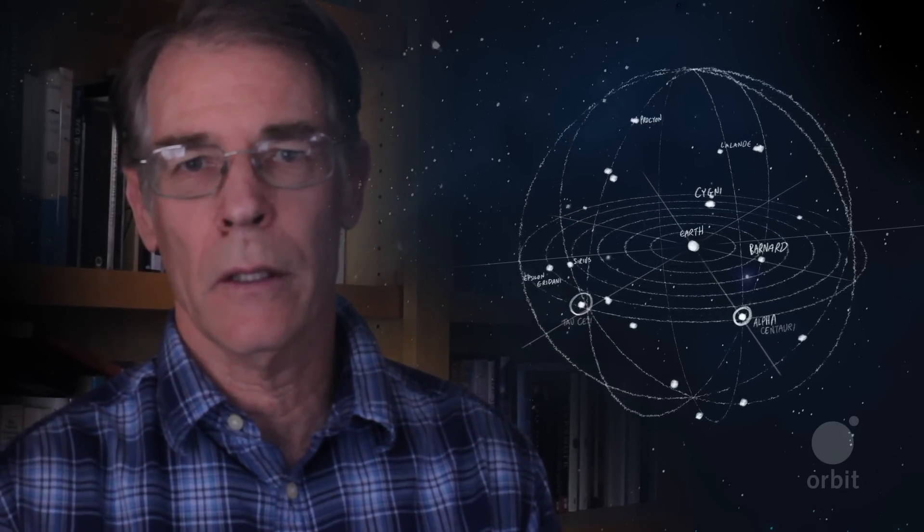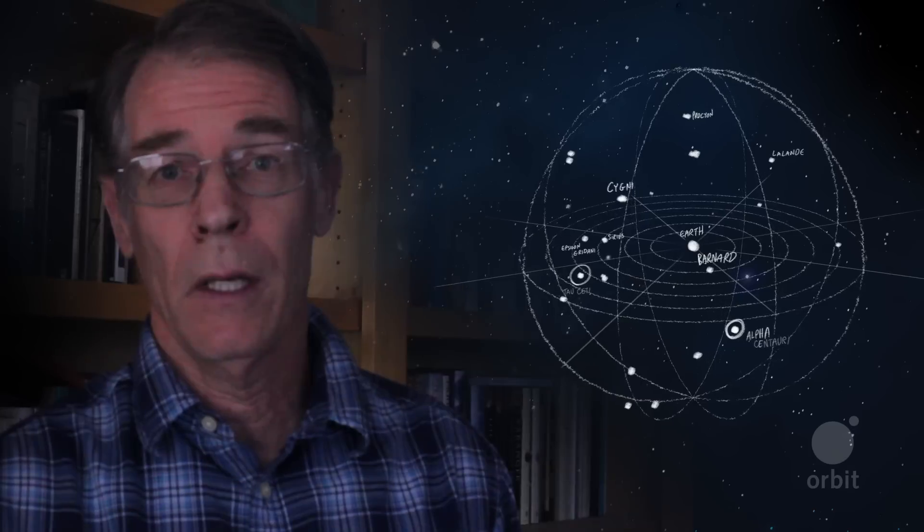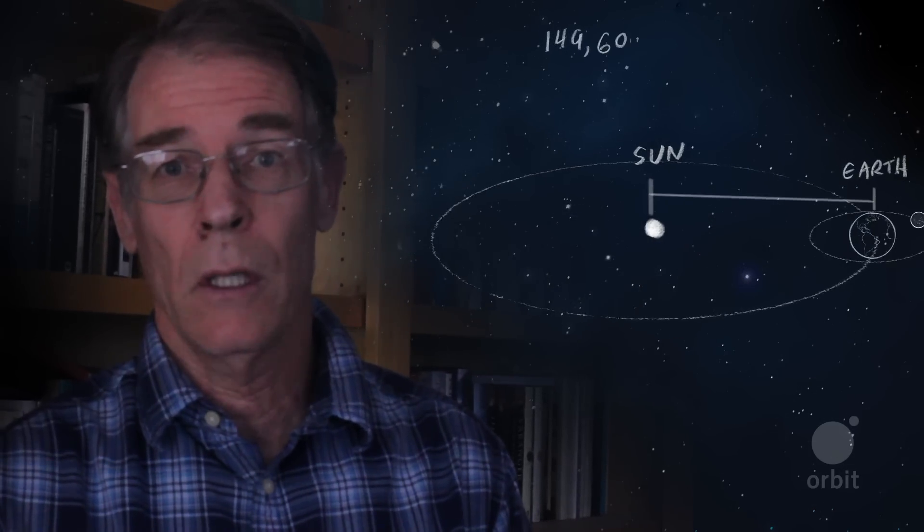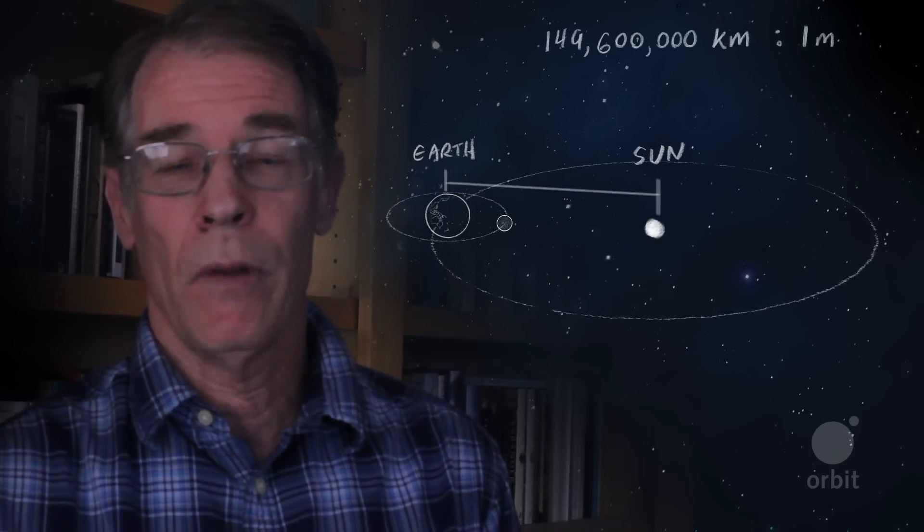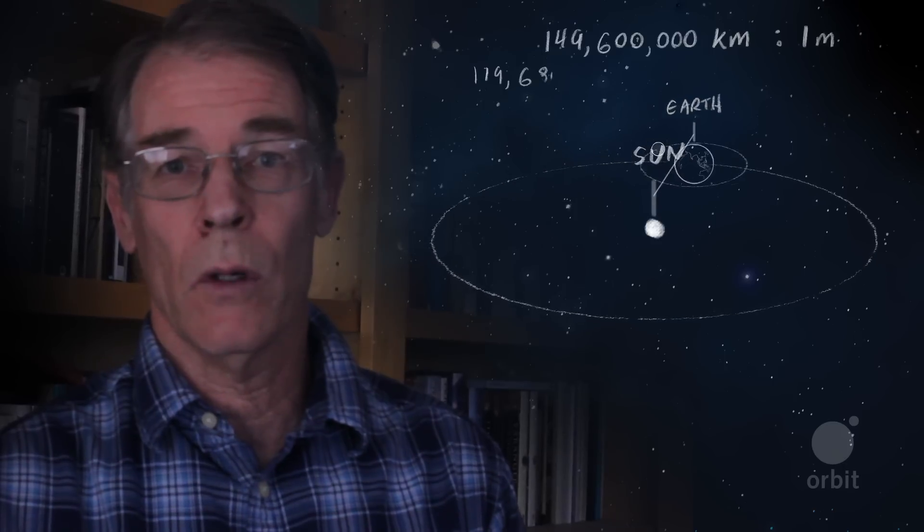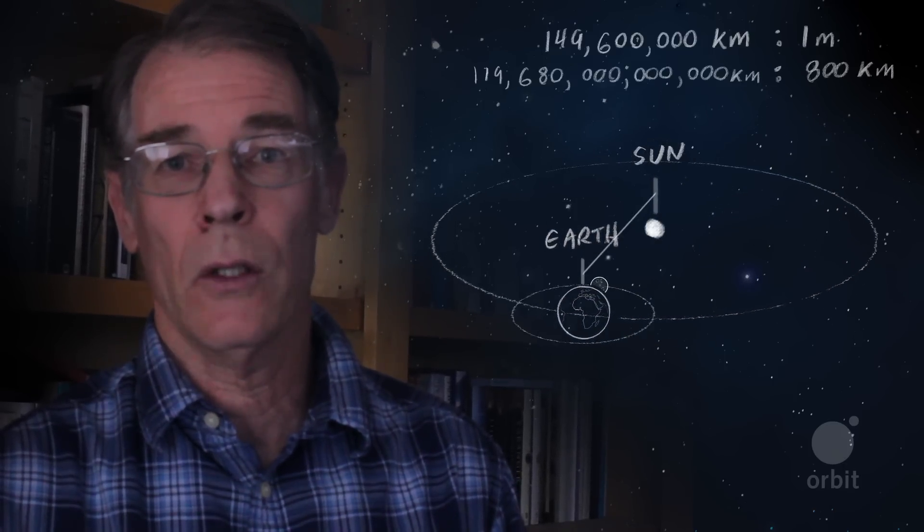Any star, including Alpha Centauri, Tau Ceti, and the other dozen or so that are that close to the Earth, in other words, within say 10 light-years or 15 light-years, that's already too far for us to easily get to. If the distance from the sun to the Earth was reduced to one meter, then the distance from the sun to Tau Ceti would still be 800 kilometers.